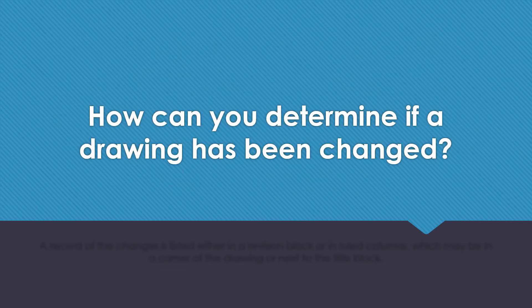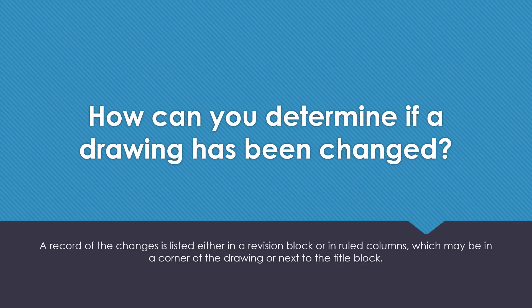How can you determine if a drawing has been changed? A record of the changes is listed in either the revision block or in ruled columns, which may be in a corner of the drawing next to the title block.